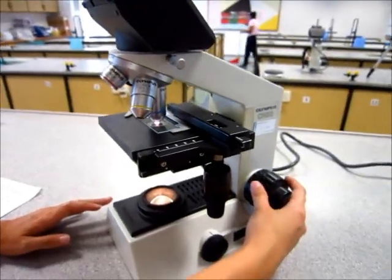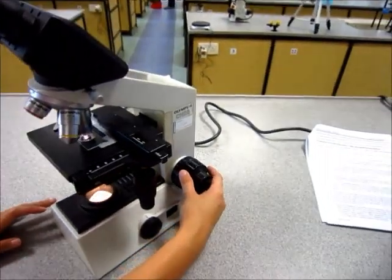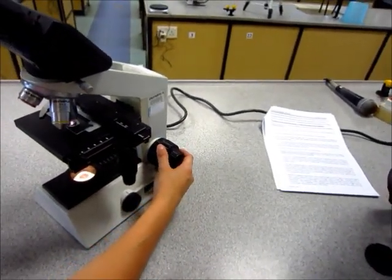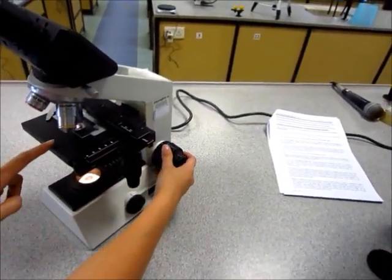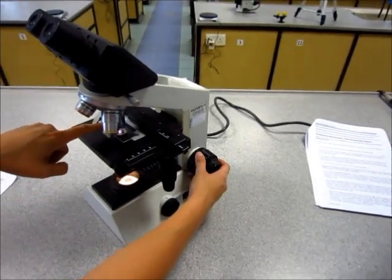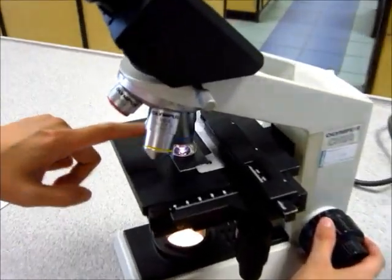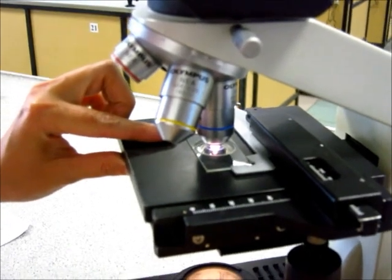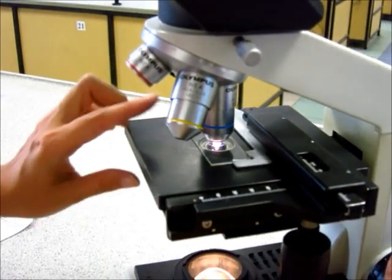If you want to adjust using the coarse adjustment knob, you should take your eyes off the eyepiece and look at the stage, just to make sure that the objective lens doesn't come crashing into your slide and breaking the slide. So we don't want that to happen.